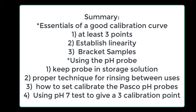So today we were able to look at the essentials of a good calibration curve that it should have at least three points. You saw ways to establish linearity with using your R-squared factor. You learned to bracket samples and put high and low calibration samples around where you're going to actually be sampling in the lab. Then we broke off and talked about using the pH probe, how that you want to keep that pH probe in a storage solution that has an equal ionic strength of what's inside the pH probe itself. That way the solution that's in the probe won't leach out. We talked about proper technique for rinsing between uses, how to calibrate the PASCO pH probes in particular. And then we showed you how in an academic world you could use a pH 7 to give you a third point on a calibration curve. And I hope this helps. See you in the lab.